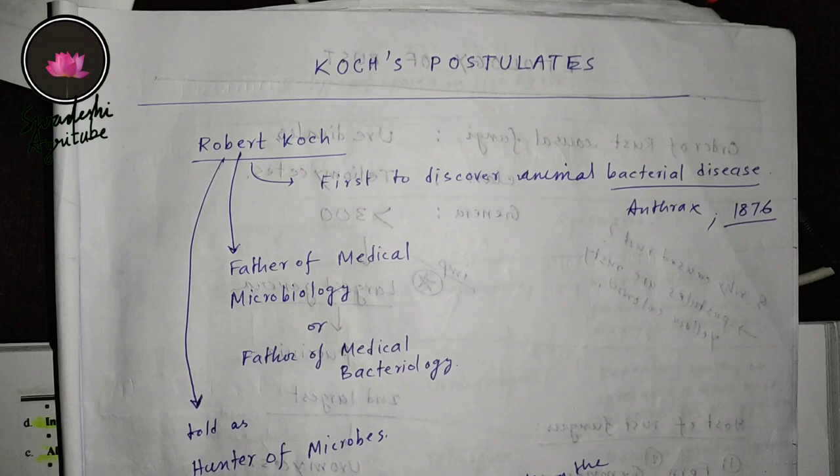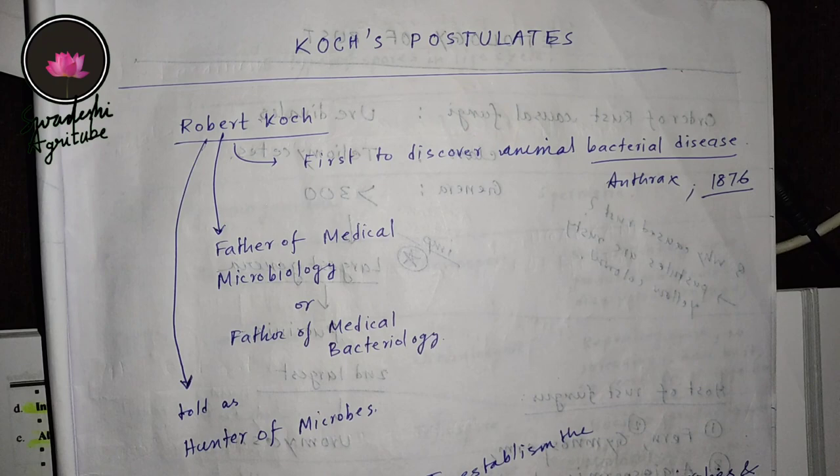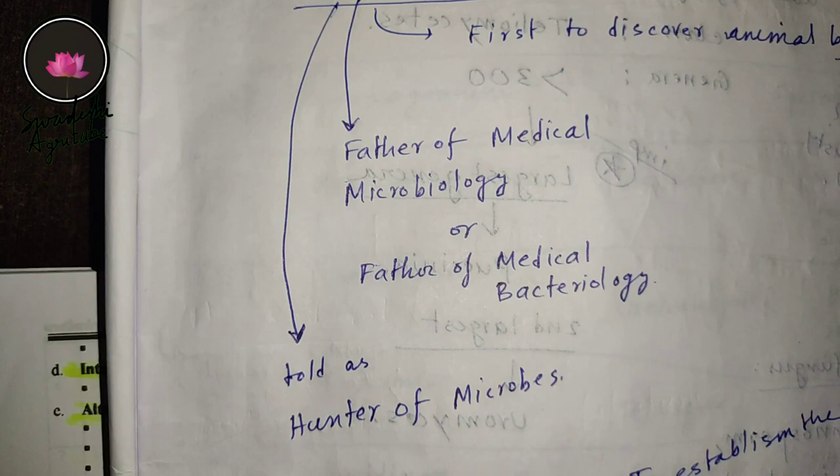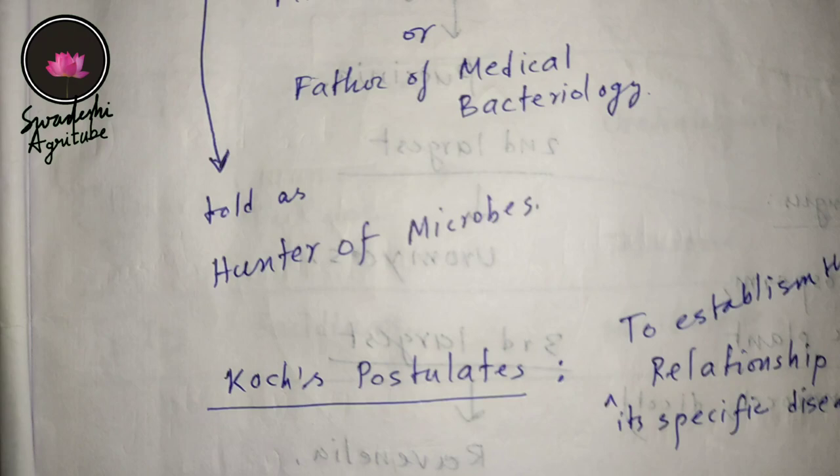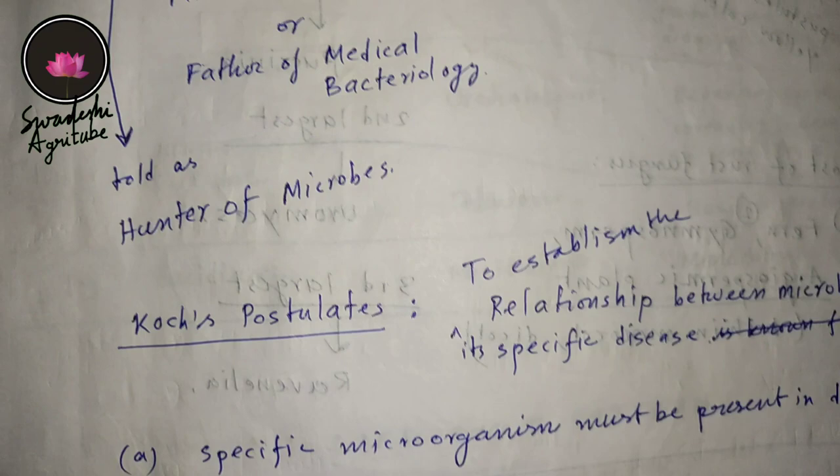Robert Koch discovered the first bacterial disease, anthrax. That's why he is called the father of medical microbiology, or father of medical bacteriology. He is also called the hunter of microbes. So let's find out his four postulates.